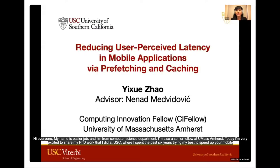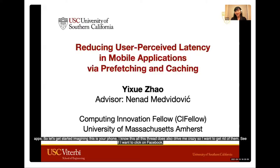Hi, everyone. My name is Yixue Zhao, and I'm from the Computer Science Department. I'm also a CI fellow at UMass Amherst. Today, I'm very excited to share my PhD work that I did at UIC, where I spent the past six years trying my best to speed up your mobile apps.